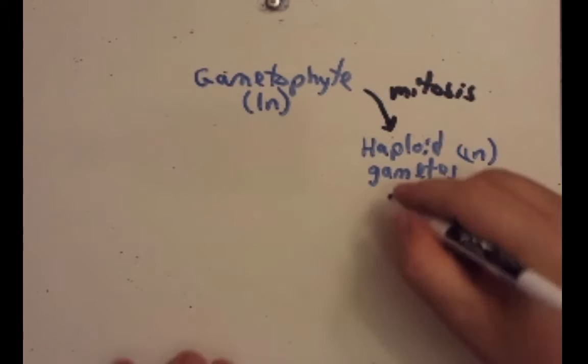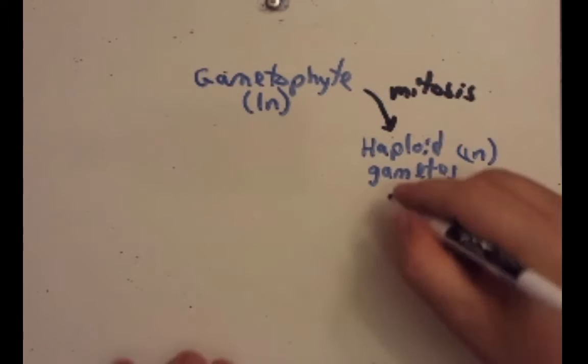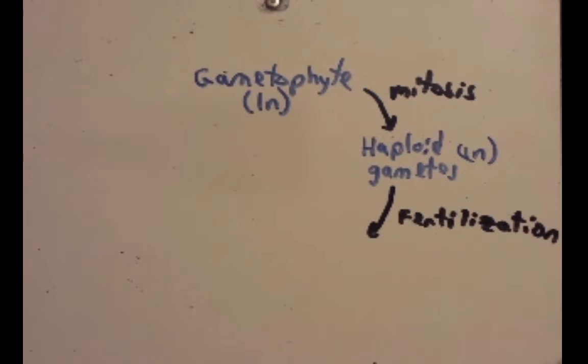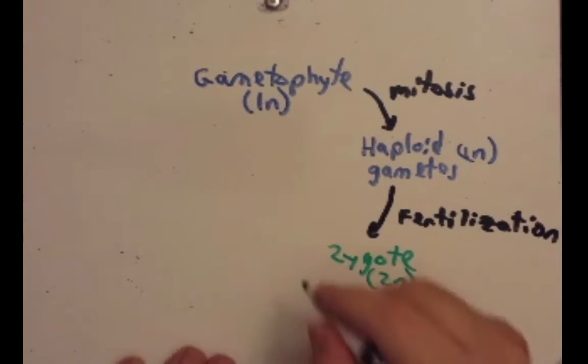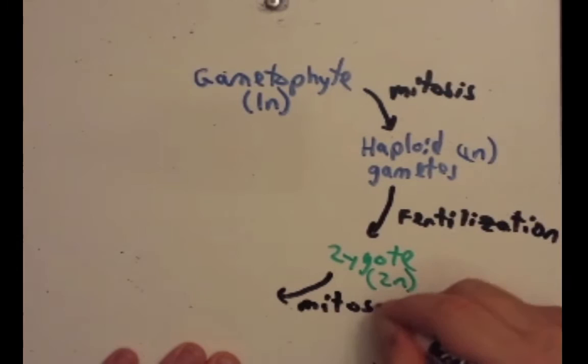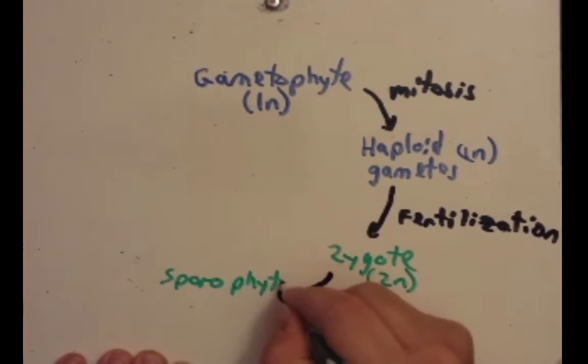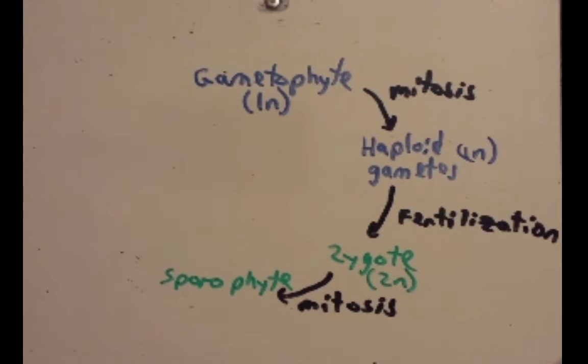These haploids then can fertilize each other, sometimes from another plant and in some species it could be the same plant. So we'll write fertilization and we're going to form the zygote. We're going to begin the next stage of the plant's life. So I'm going to use a different color. Zygote, and the zygote now is 2N. It's diploid. Then through mitosis it generates the sporophyte. And because it's using mitosis it goes from diploid to diploid. So these will also be diploid.